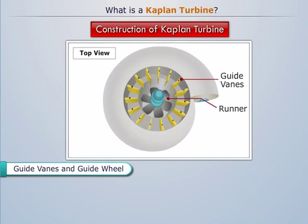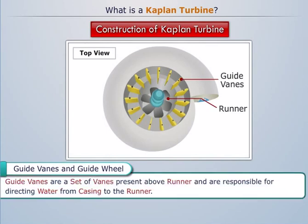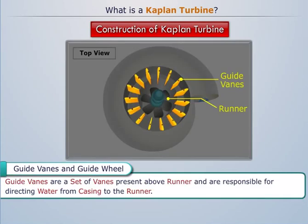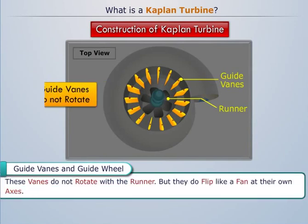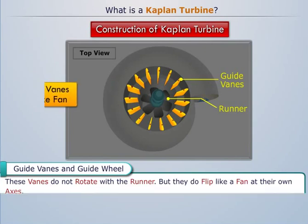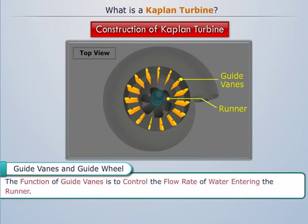Guide vanes and guide wheel: Guide vanes are a set of vanes present above the runner and are responsible for directing water from the casing to the runner. These vanes do not rotate with the runner, but they do flip like a fan at their own axis. The function of guide vanes is to control the flow rate of water entering the runner.